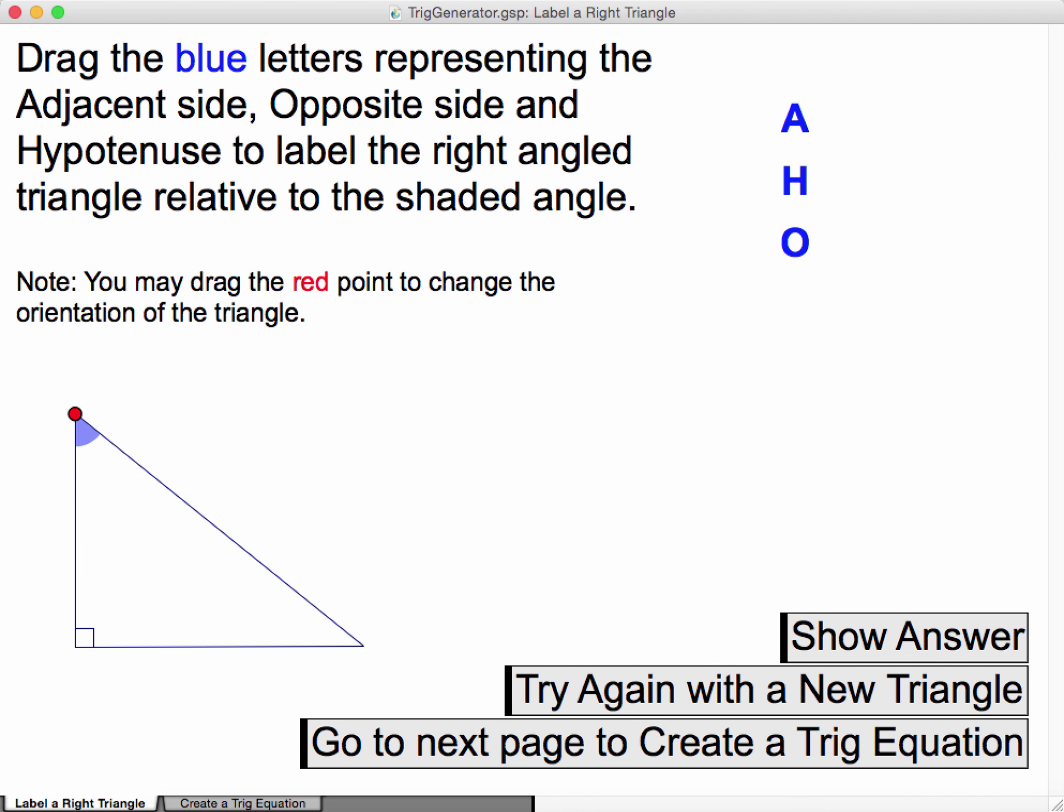Okay, so this is a really simple sketch to just practice. First of all, practice placing the adjacent, hypotenuse, and opposite sides on a right-angled triangle, given an angle.